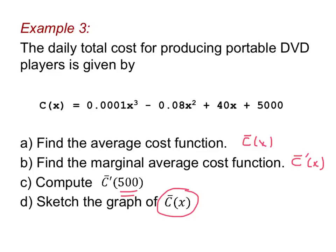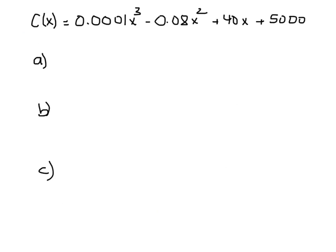Let's start with letter A, where they ask us to find the average cost function, that is C bar. Remember the way you get C bar is you divide C(x) by x. So for us that means we're going to take this top function and divide each term by x. That means the first term would be 0.0001x² because x³ divided by x is x².